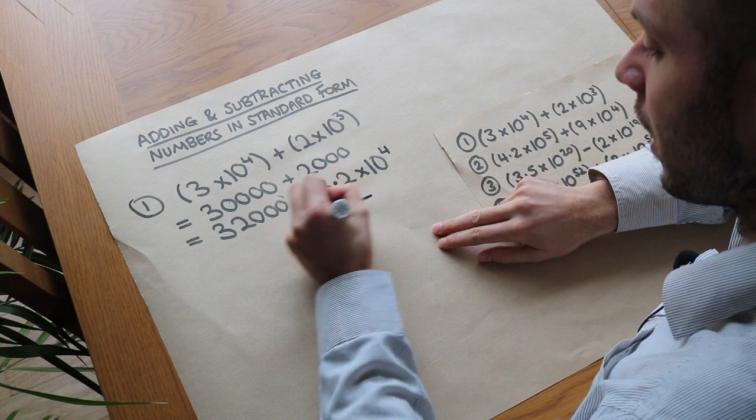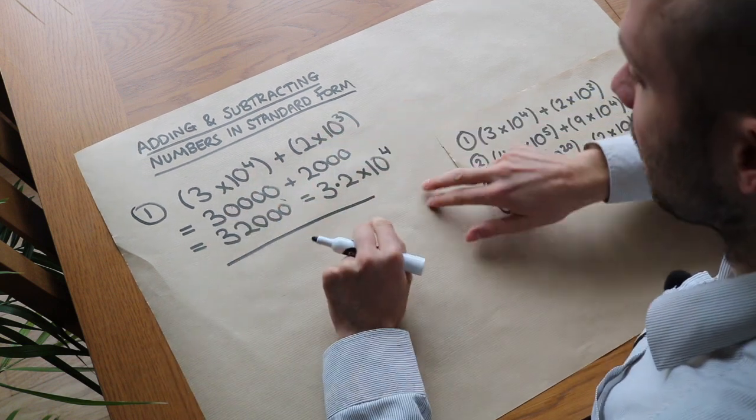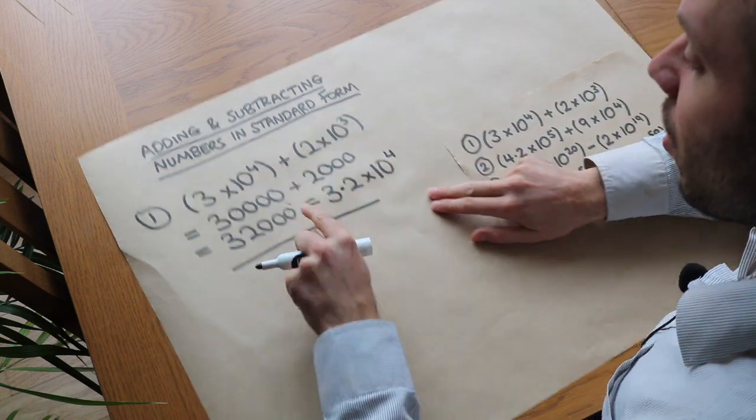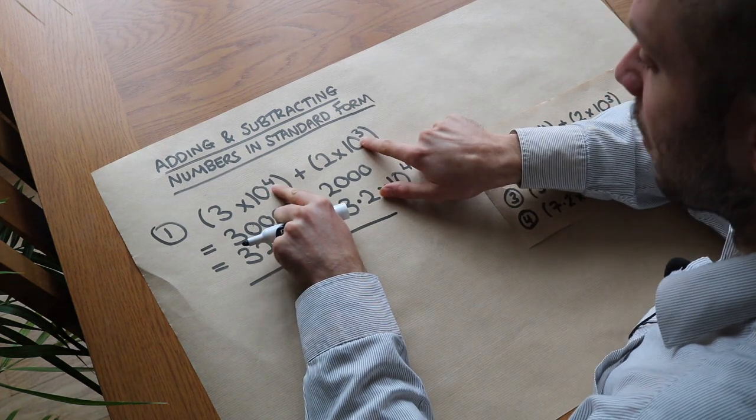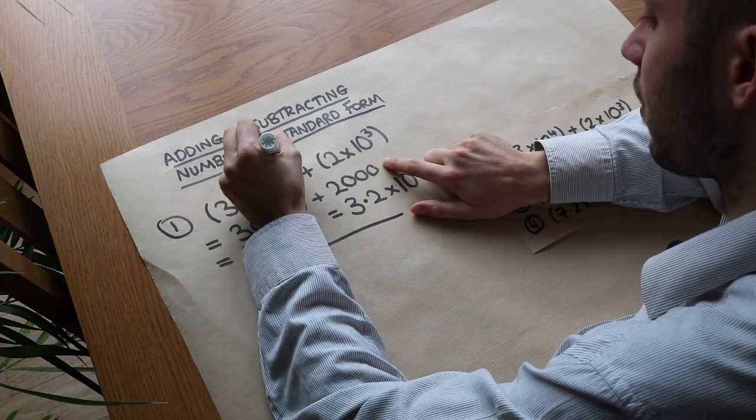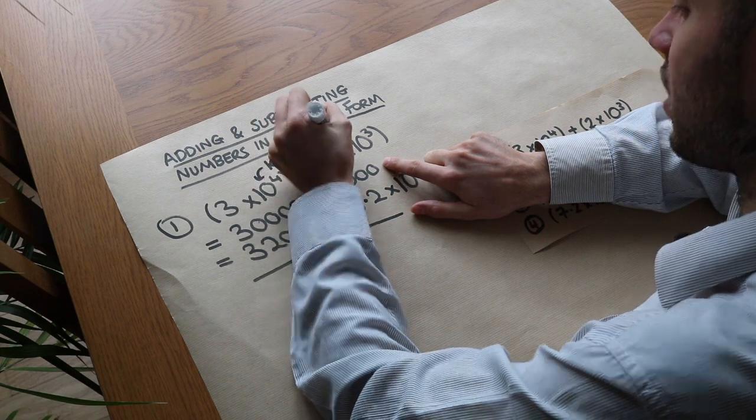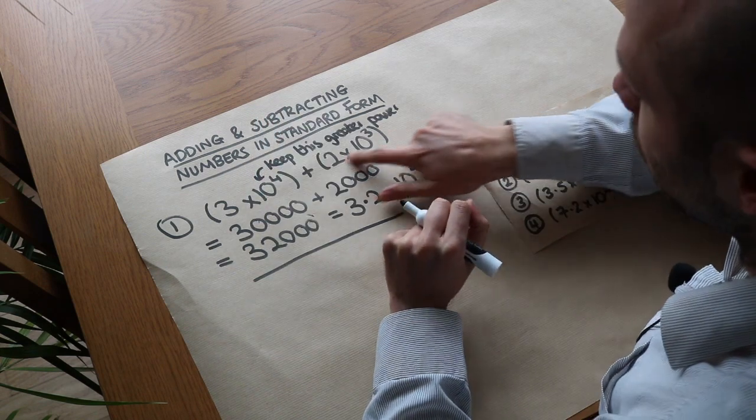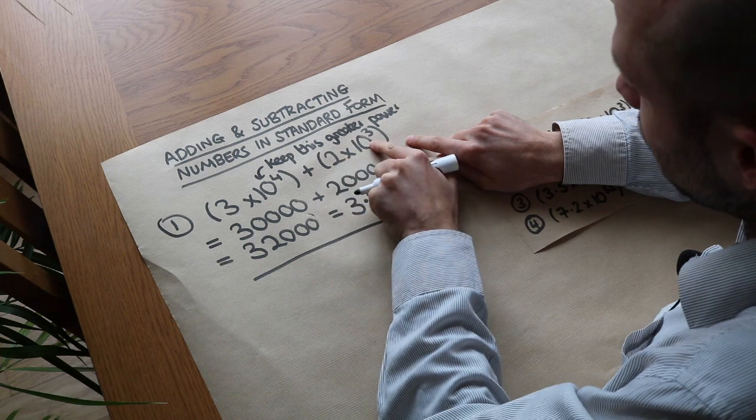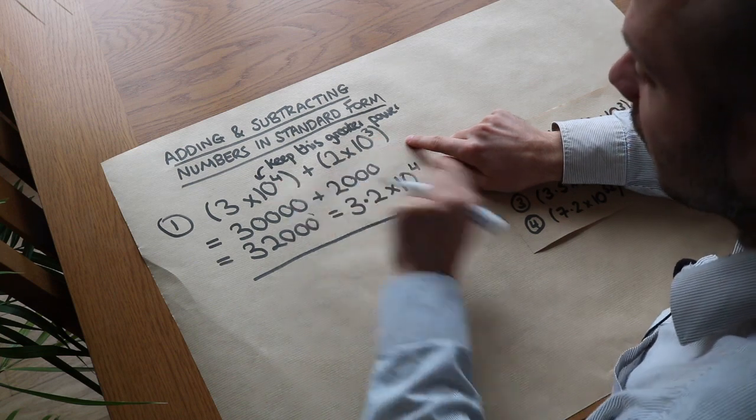But there is an alternative way of doing it which keeps these numbers in standard form. Basically, whichever of the two has the higher power, you keep it like this. Keep this greater power. And then the one with the lower power, you change this so that it has the same power as the higher power.